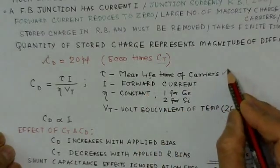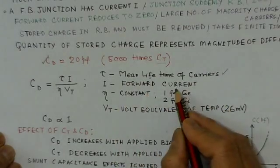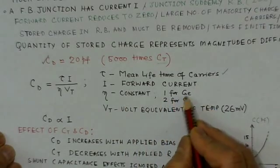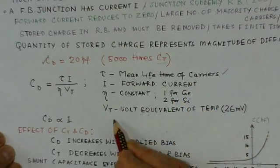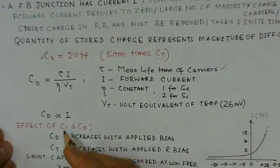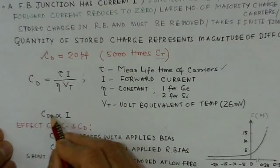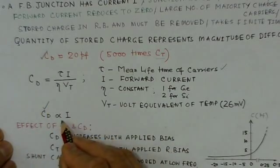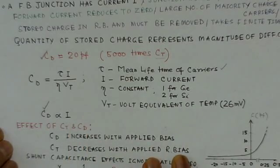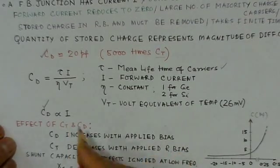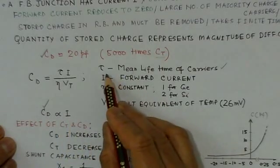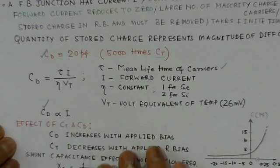Tau is the mean lifetime of the carriers. And I is the forward current. And eta is constant, is 1 for germanium and 2 for silicon. And V_T is the volt equivalent of the temperature, that is 26 millivolts roughly. So what we observe here, the C_D, the diffusion capacitance, is proportional to I. Now you can evaluate from this equation the value for the diffusion capacitance.